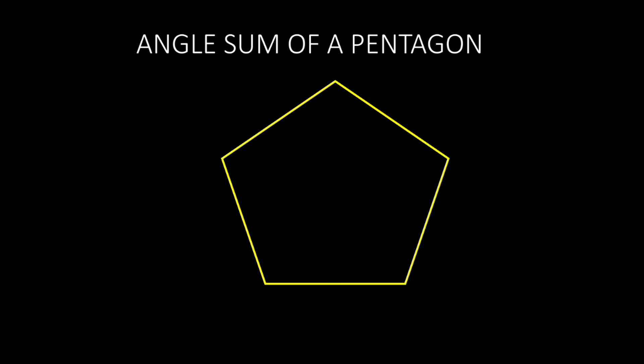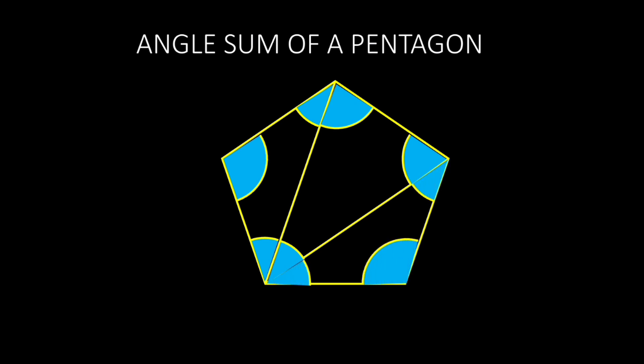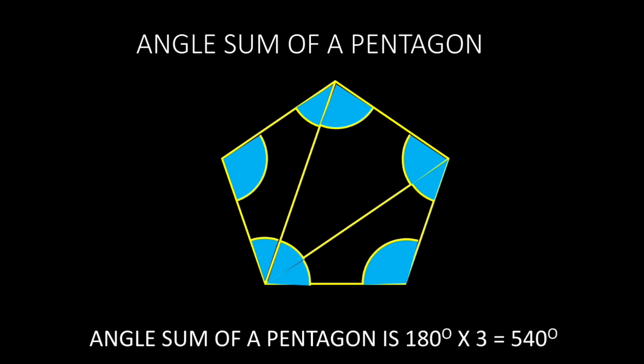In a pentagon, which is a five-sided polygon, we can find the minimum number of triangles it can be split into. When a pentagon is split, three triangles are formed. So the angle sum is found by adding all the angles of these three triangles: 180 degrees multiplied by 3, which equals 540 degrees.